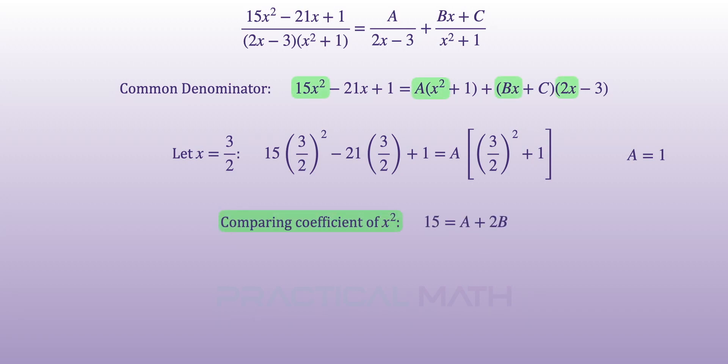Next, we will compare the coefficients for x squared, giving us a 15 on the left and A plus 2B on the right. Solving for B will give a result of 7.